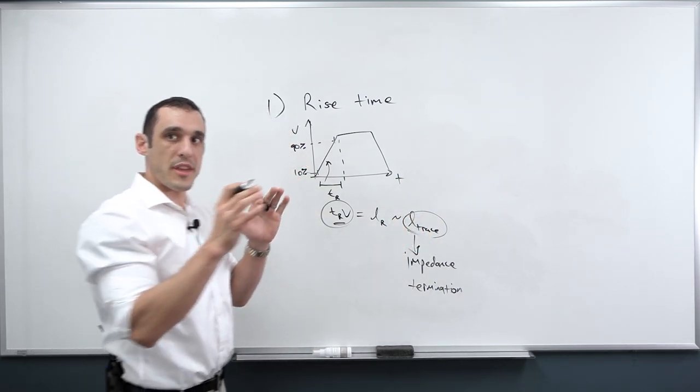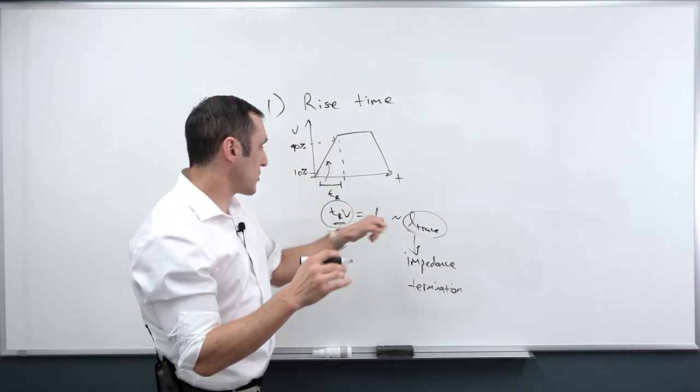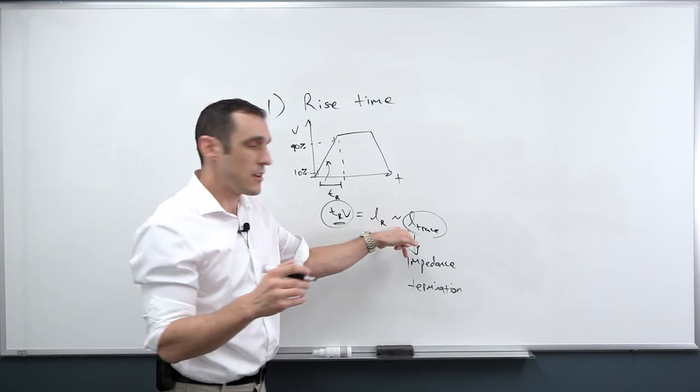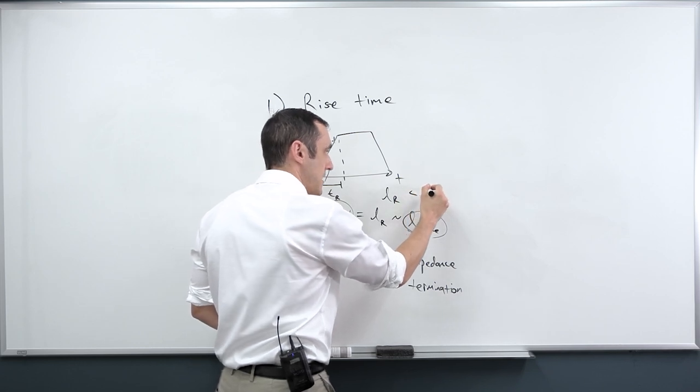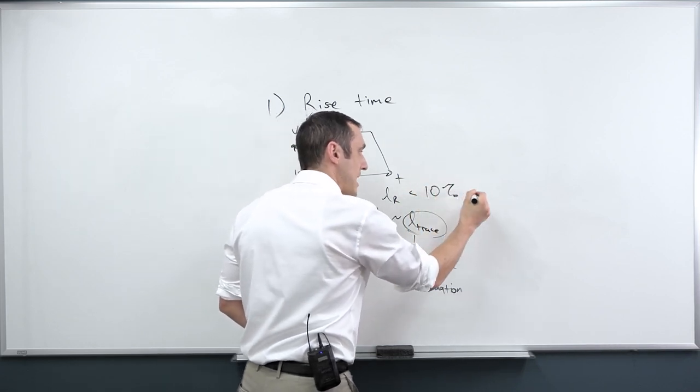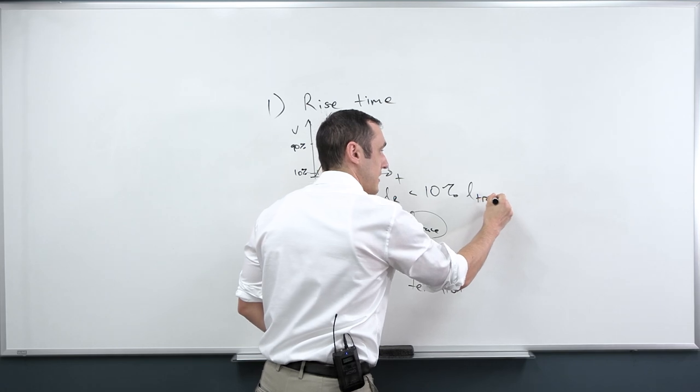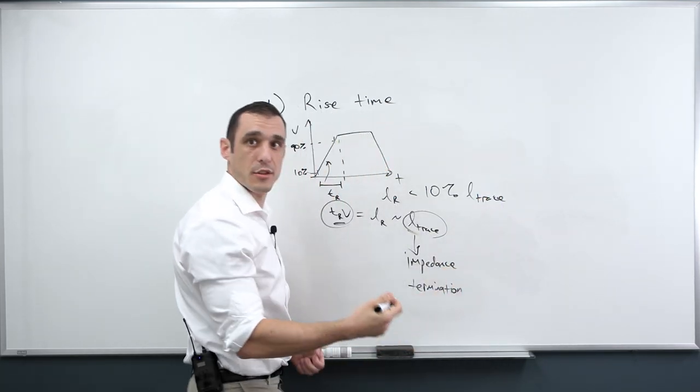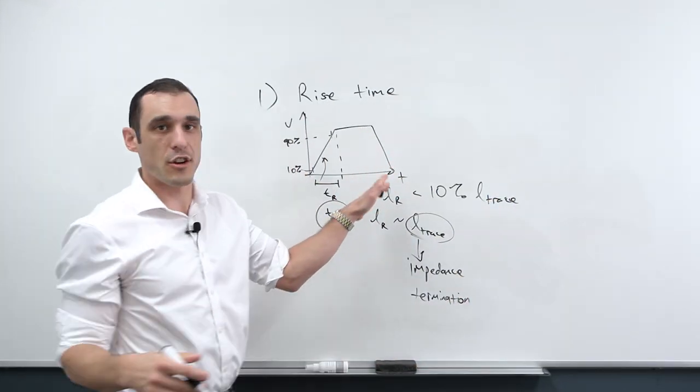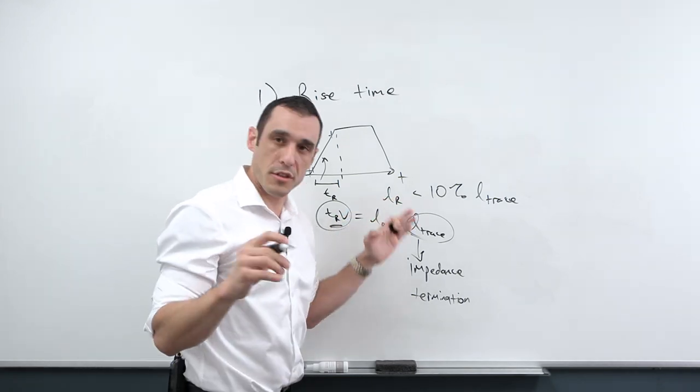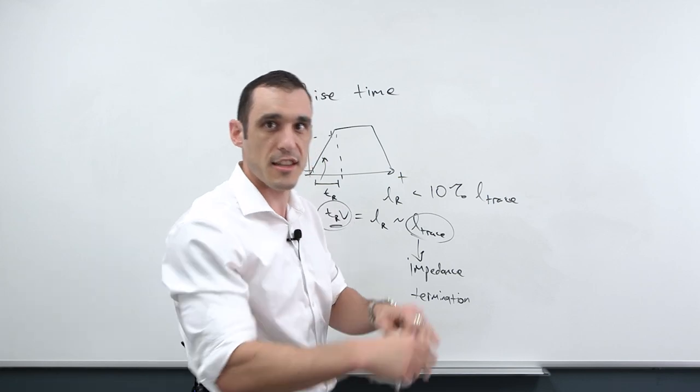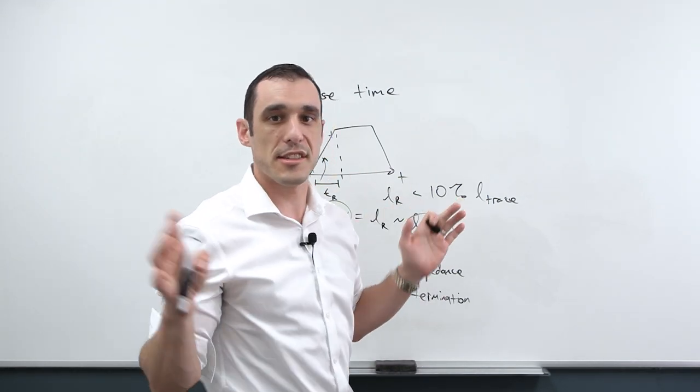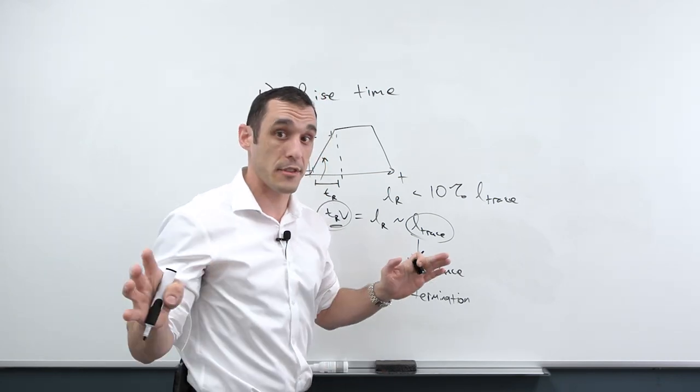So you just need to compare this quantity to this quantity. So this is where people start to disagree, because when you say on the order of, I mean, do you mean my rise length has to be less than, let's say, 10% of the trace length or is it 20%? What is that fraction? This is where nobody can really agree. And I'm sure there's going to be someone that comes into the comments and says, Eric Bogutin says this, or Rick Hartley says this. Listen, there's going to be 10 other guys that say 10 other things.